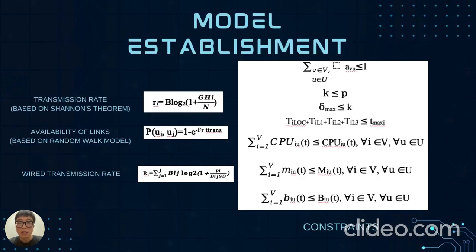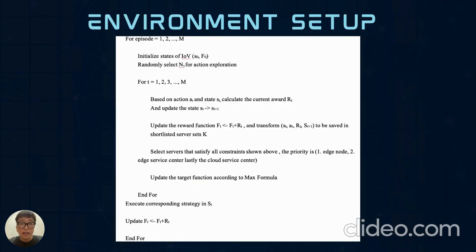In this IOV simulation, the model includes servers and vehicles within a specific surface area. Considering tasks available, computational resources, and offloading methods, key constraints ensure tasks are offloaded to a single server or executed locally. For detailed equations and constraints, please refer to the term paper. In the dynamic environment of IOV, resource allocation is a non-convex optimization problem with multiple constraints — this is an NP-hard problem. DRL has great capabilities of recognizing dynamic challenges, which is why we choose it. Each update of the reward function helps improve resource allocation and task offloading strategy, ultimately reaching the optimal strategy.